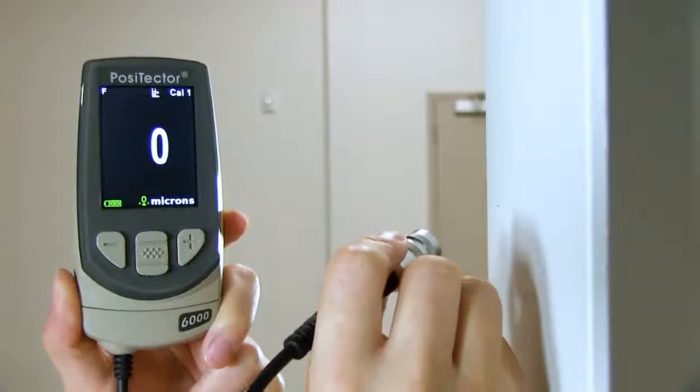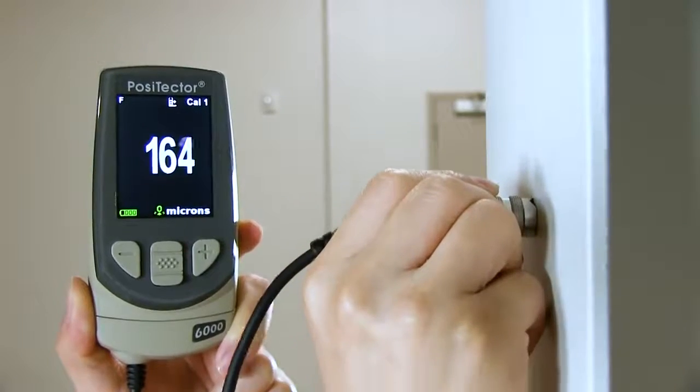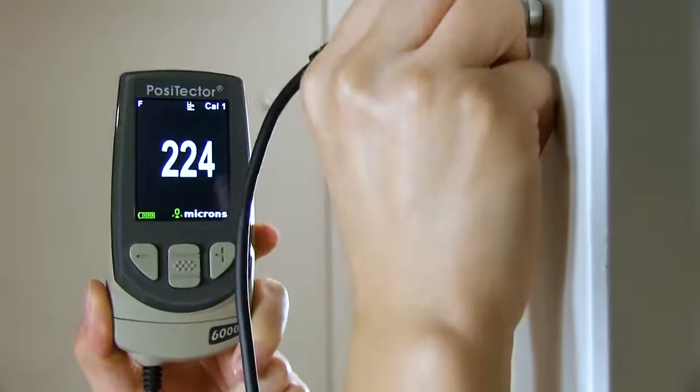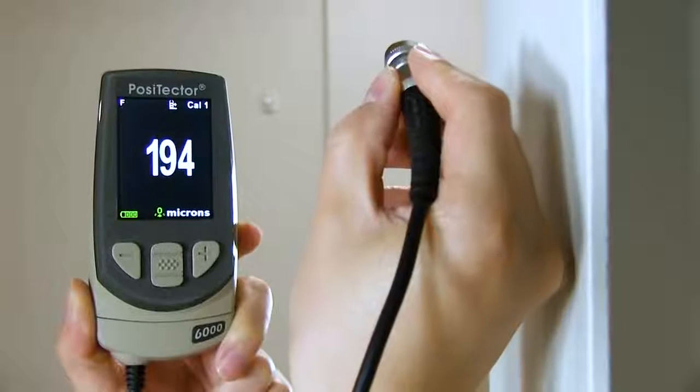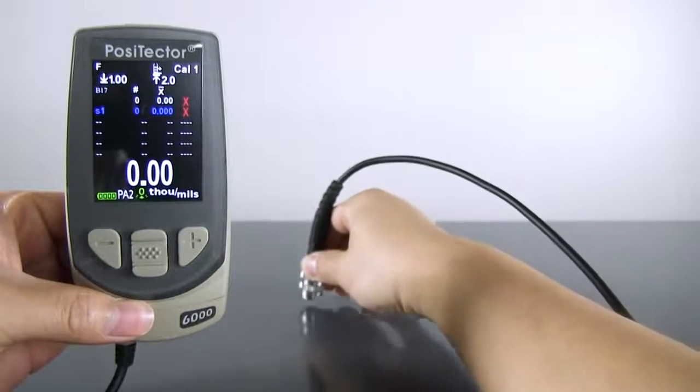There are three ways to scan with the Positector 6000. In normal scan mode, each reading is displayed and saved to memory if enabled. Normal scan can be used in conjunction with other modes.